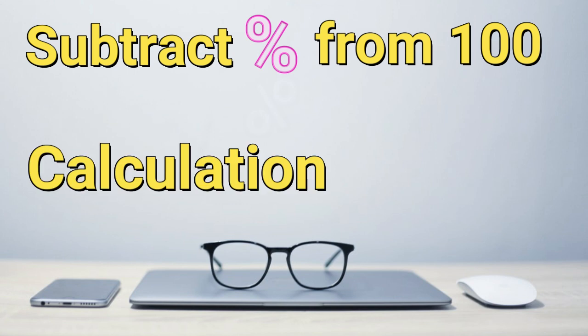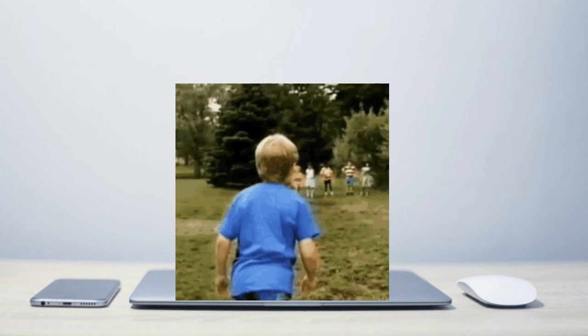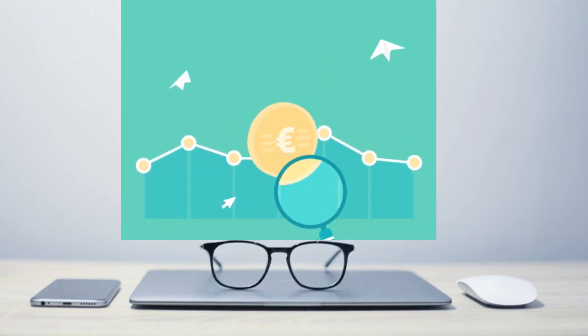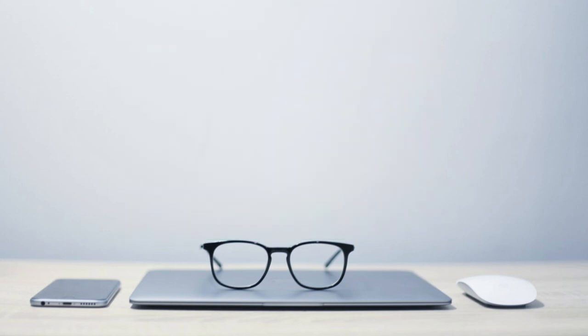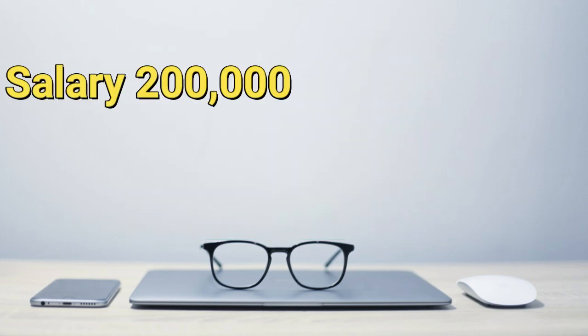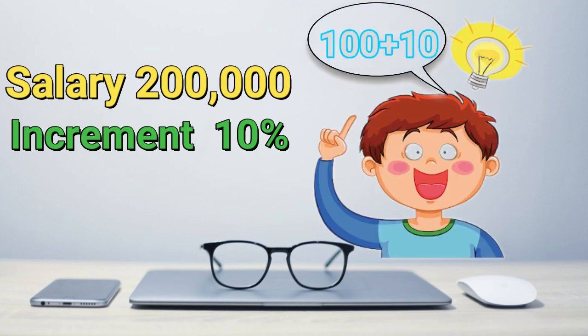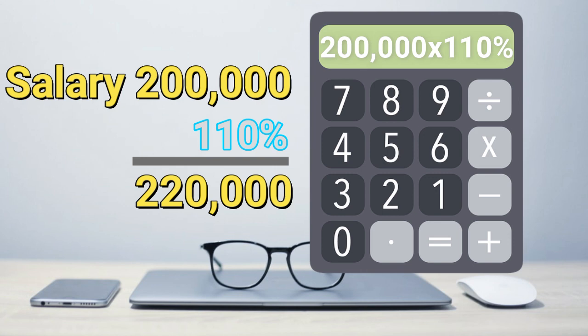Let's recap this method: subtract the percentage from 100 and calculate the rest on the calculator — no double calculation. But wait, what about increments? How do you find a 10% increase in your salary the shortest way possible? Let's suppose you are earning 2 lakh and you will have a 10% increase this year. You just add 10 to 100 in your mind, which gives 110, and then find 110% of your current salary — that's 2 lakh 20 thousand.